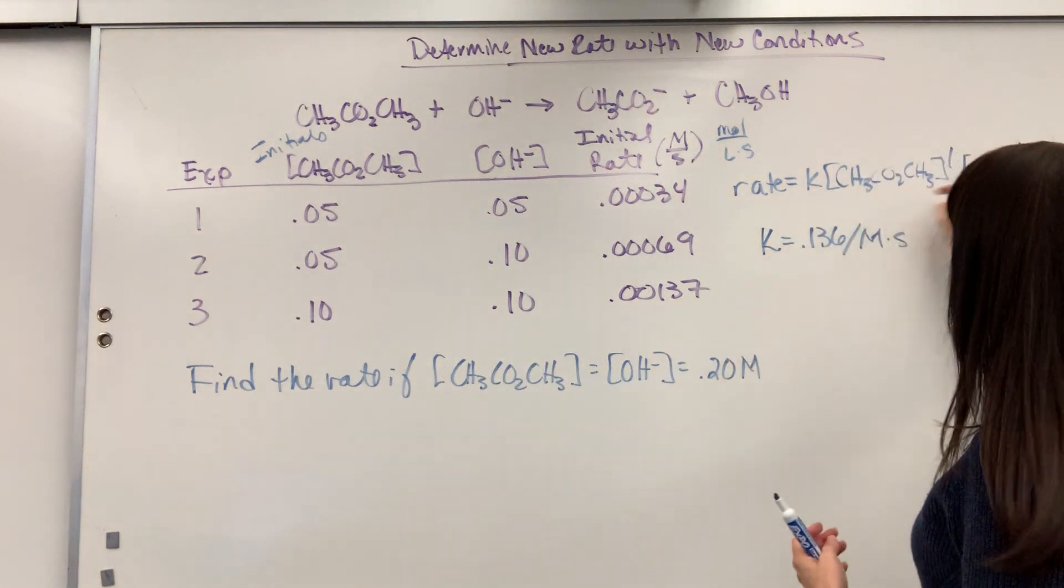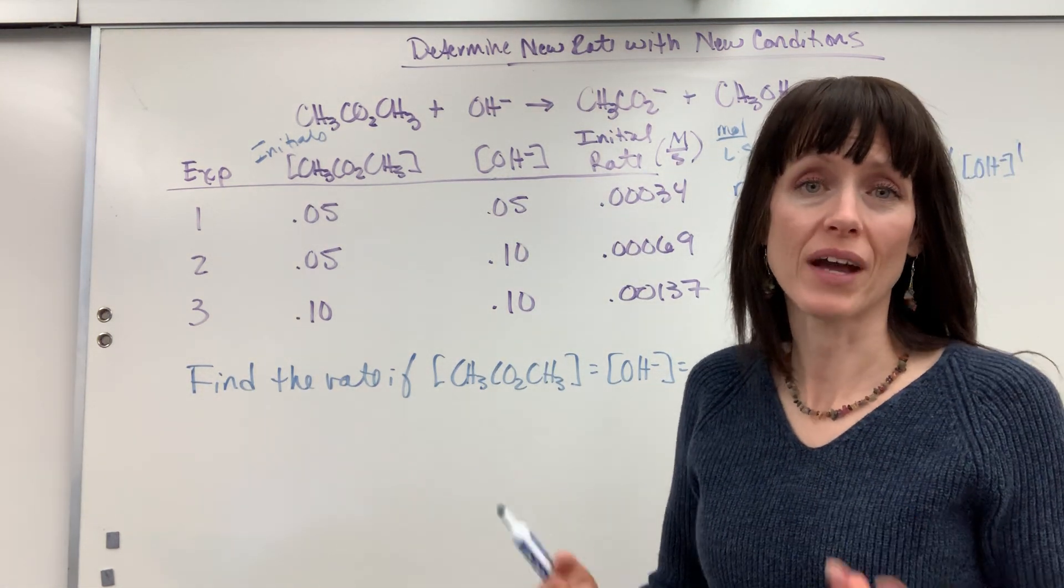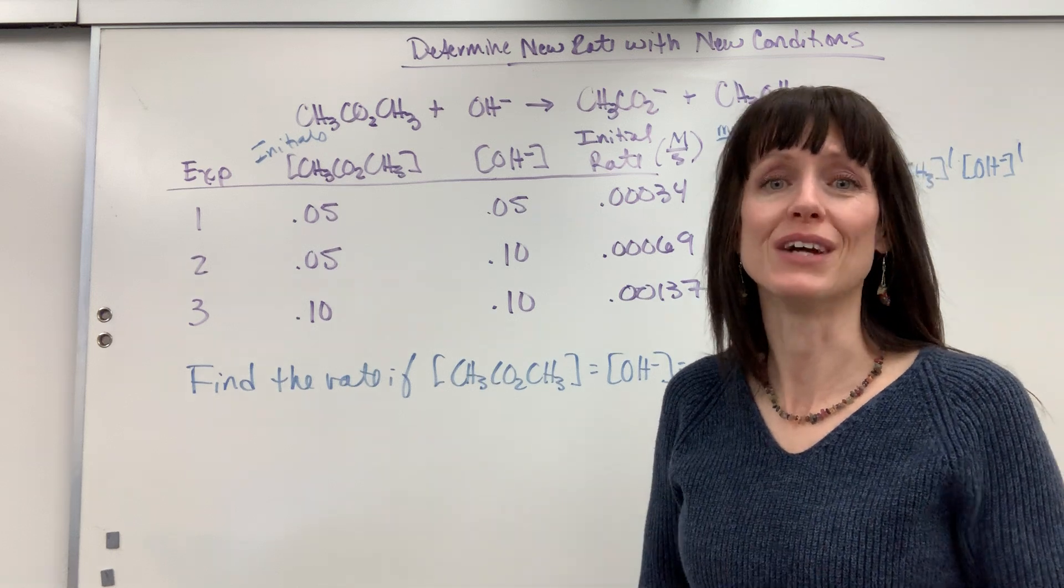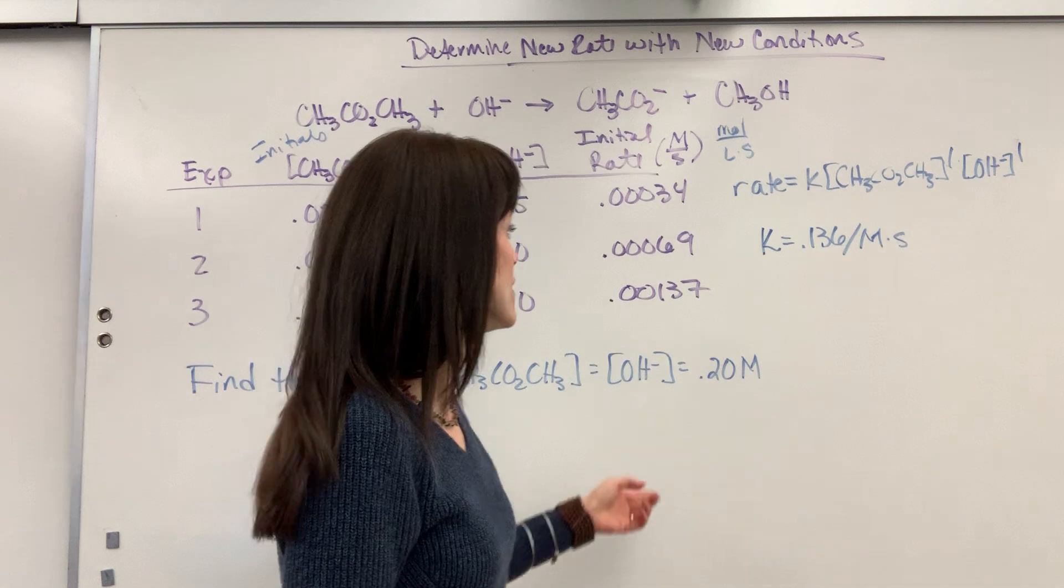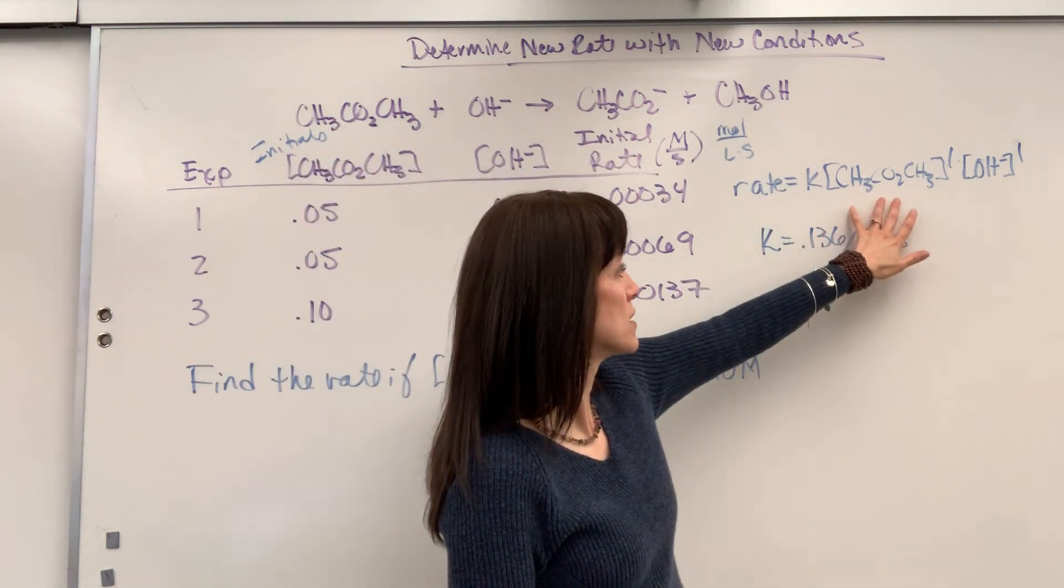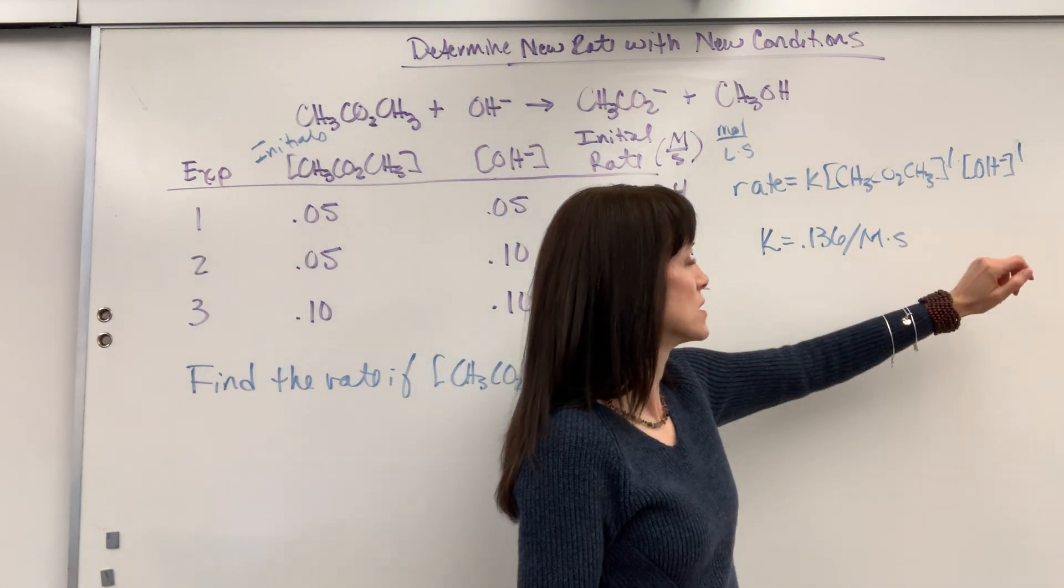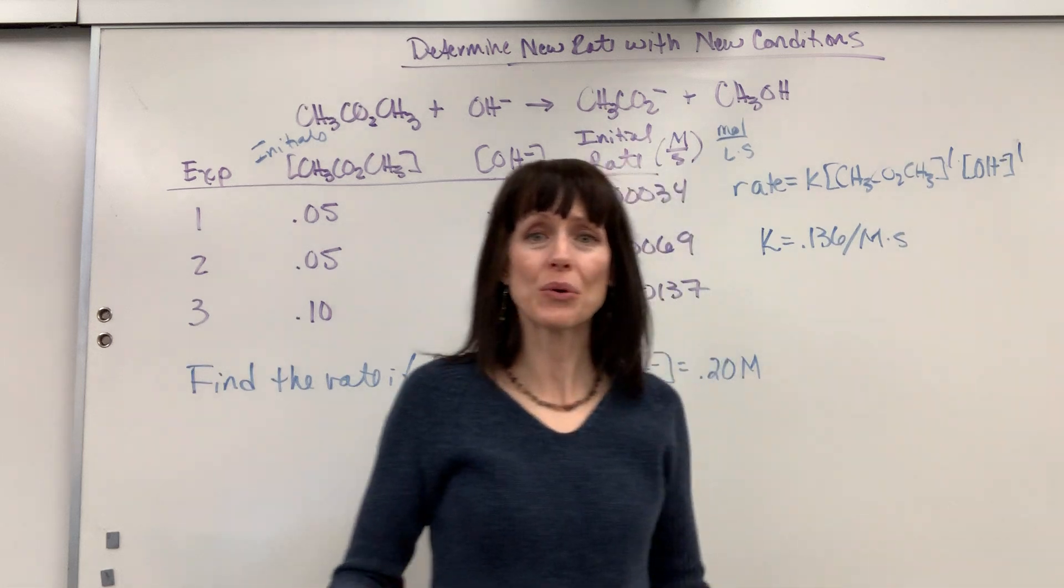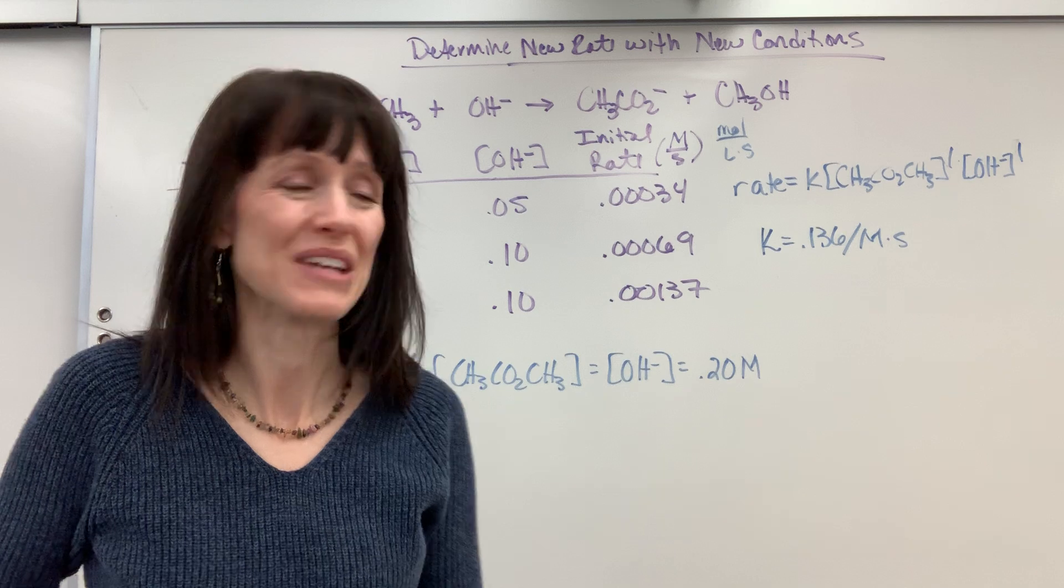Again, because we did the hard work when we found that rate law, this is pretty easy. All you have to do is plug in all your values and you have one unknown. The one unknown is rate. We have the rate constant. We found that. They gave us the concentration of the methyl acetate and the concentration of the hydroxide. And we have our orders. We have the M and the N. So now all we do is plug everything in.